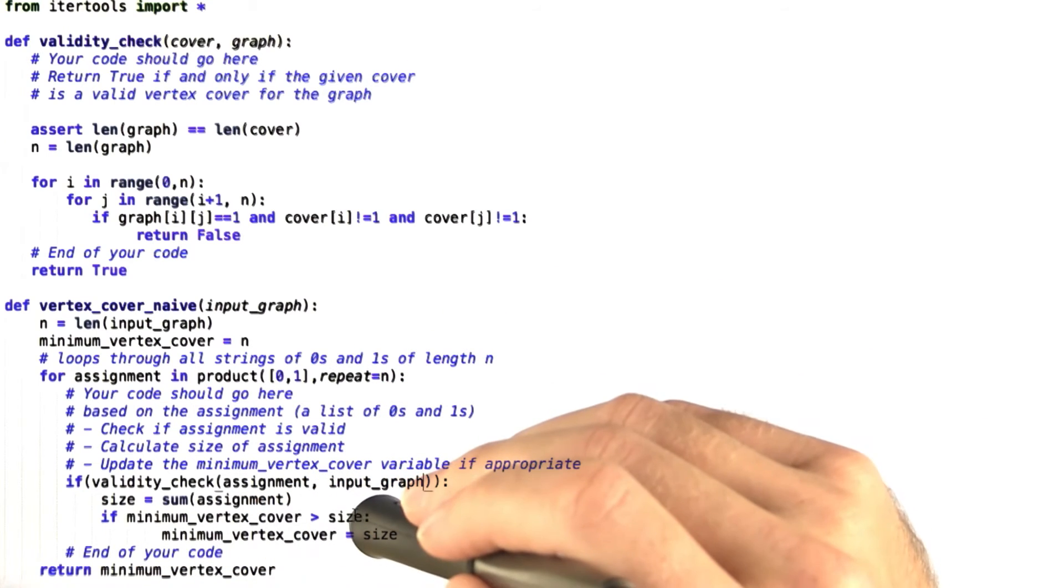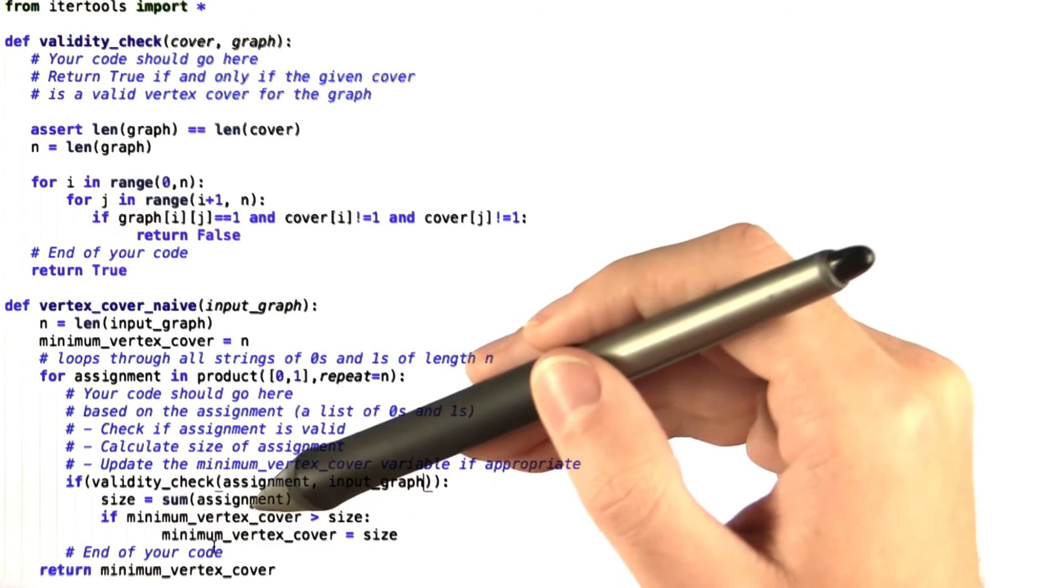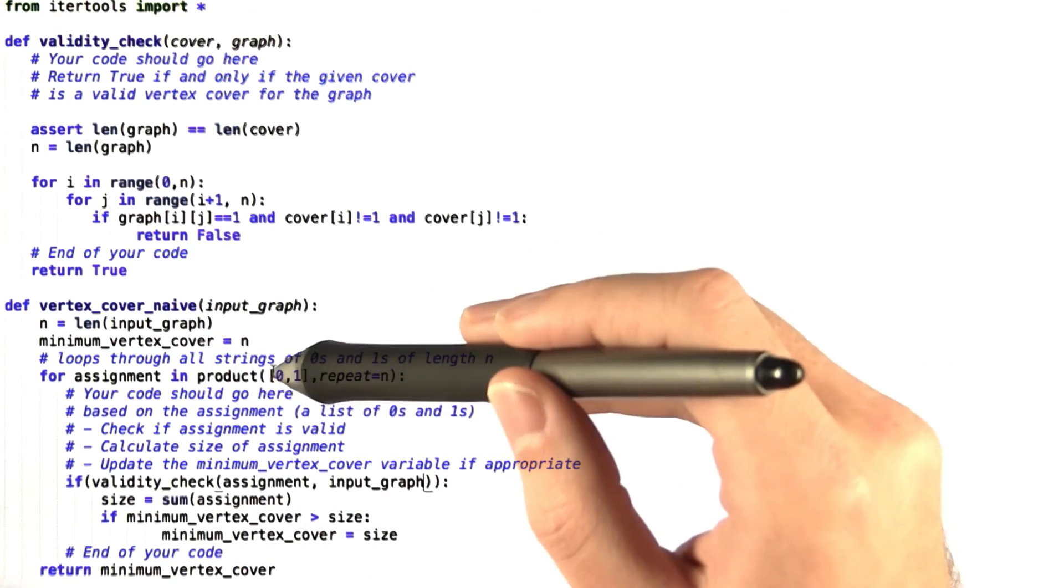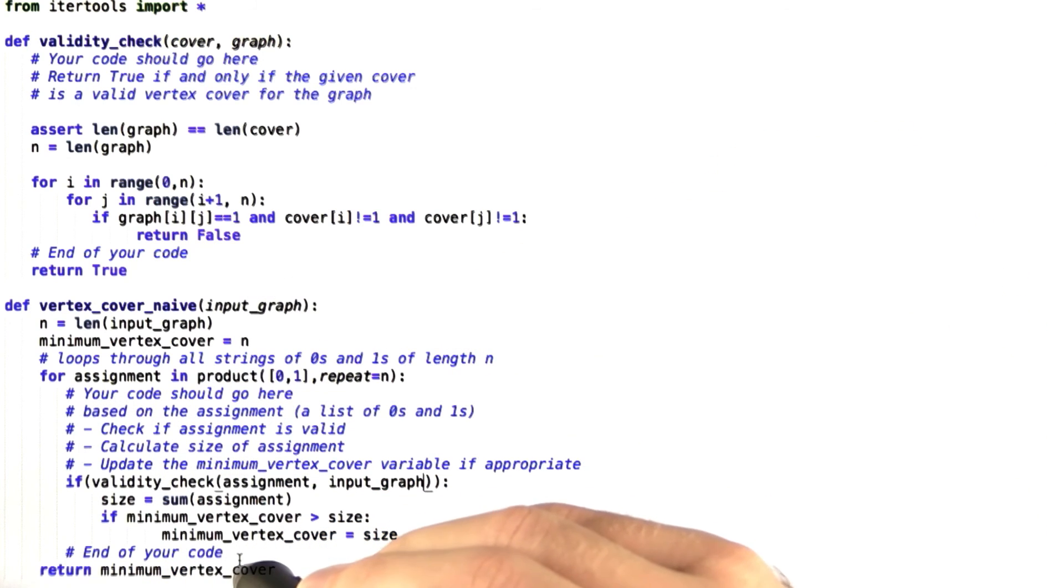If the minimum vertex cover is greater than the size, then we set that to be the size—we update it. Otherwise, we leave it alone. Once we've looped through every possible assignment, and remember there are a lot of possible assignments, then we return the minimum vertex cover.